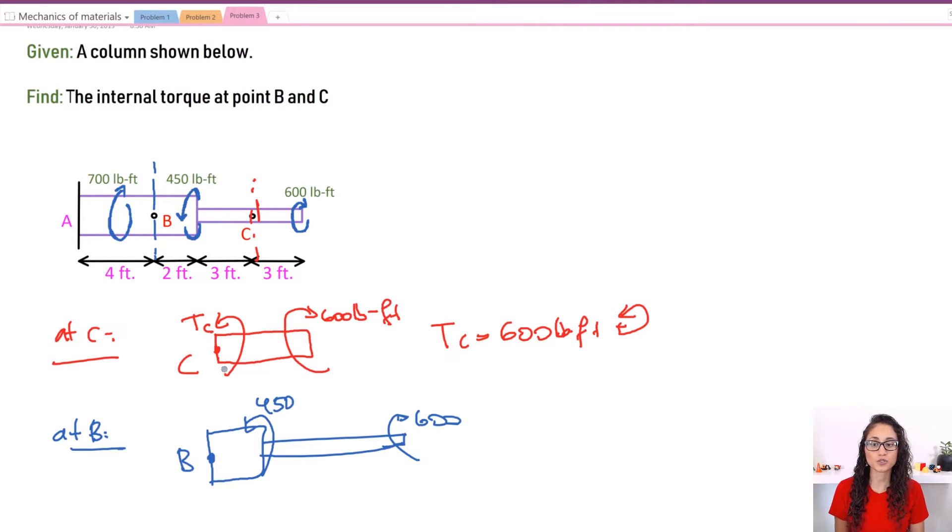So for me to reach equilibrium here, TB has to be 600 minus 450, but it has to be the direction of 450 so that way I have equilibrium. So let's do this. Let's take this as our direction being positive. So I'm going to do it here.